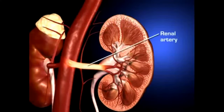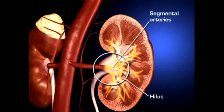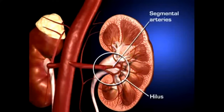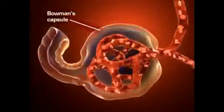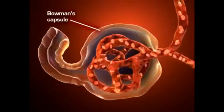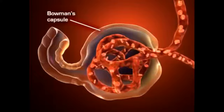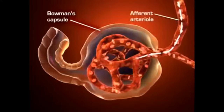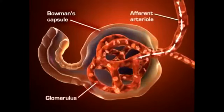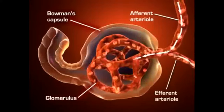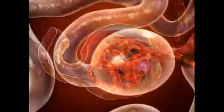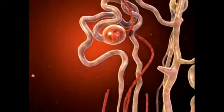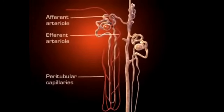Each kidney is supplied with blood by a single renal artery that arises on its respective side of the aorta, before dividing into five segmental arteries that enter the hilus. Within the kidney, each segmental artery branches into several lobular arteries, which further subdivide to form interlobular arteries that branch off into afferent arterioles. Blood flows into the glomeruli through the afferent arterioles and out of the glomerulus through the efferent arterioles. The afferent and efferent arterioles regulate glomerular capillary pressure by selectively dilating or constricting.